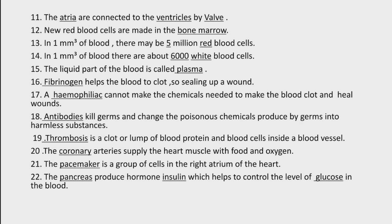Thrombosis is a clot or lump of blood protein and blood cells inside blood vessels — اگر کسی blood vessel کے اندر blood clot form ہو جائے تو اس disease کو thrombosis کہتے ہیں۔ The coronary artery supplies the heart muscles with food and oxygen. The pacemaker is a group of cells in the right atrium of the heart جو electricity produce کرتا ہے اور heart کو pump کرنے میں help کرتا ہے۔ The pancreas produces the hormone insulin, which helps to control the level of glucose in the body.